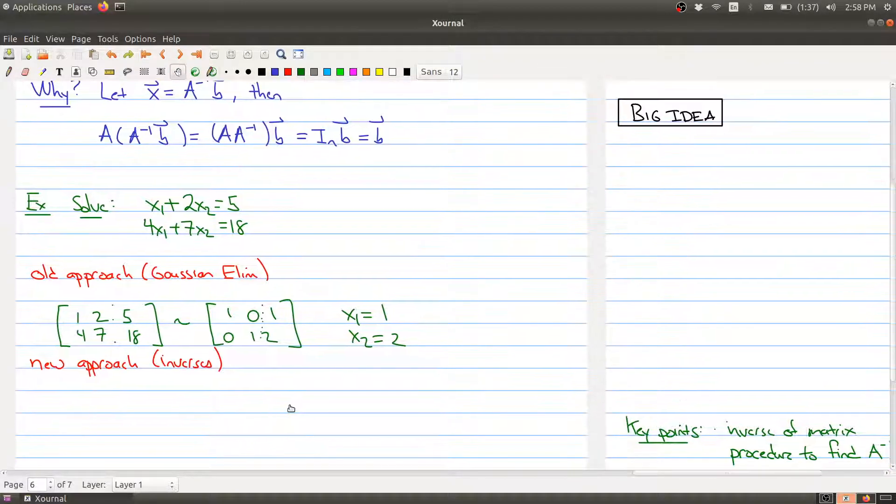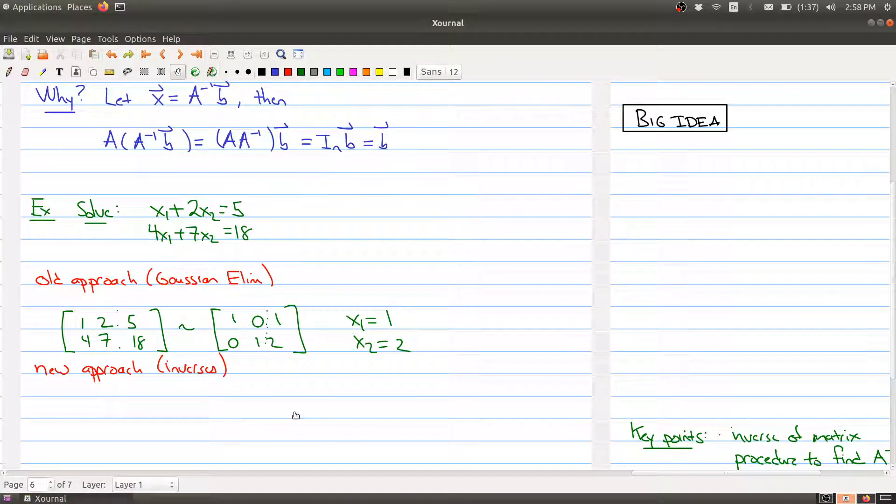What about the new approach? Okay, well, notice that the coefficient matrix in this case is the matrix 1, 2, 4, 7, which we've seen a couple times. But more importantly, what we have is that the system of linear equations is equivalent to the matrix equation 1, 2, 4, 7, times the vector x equaling the vector 5, 18.